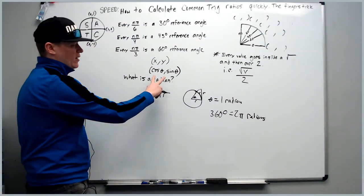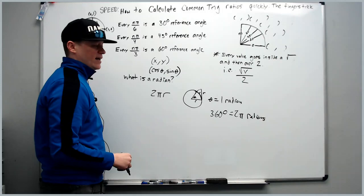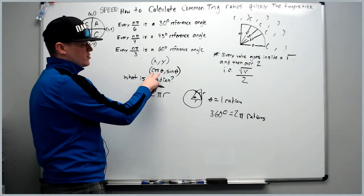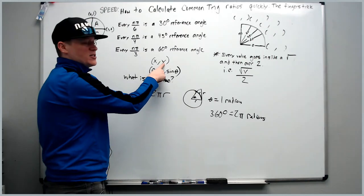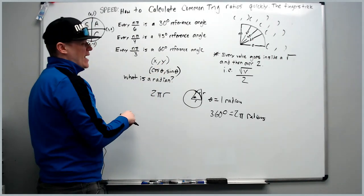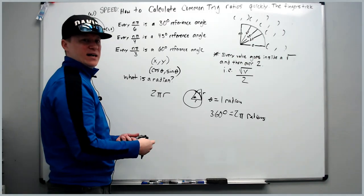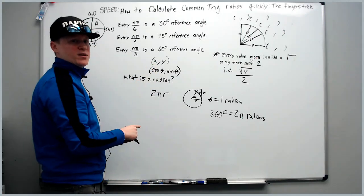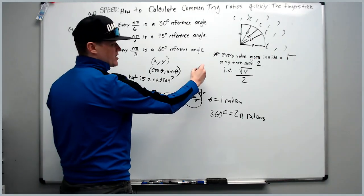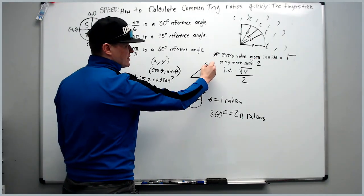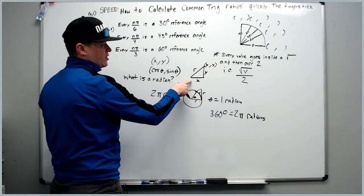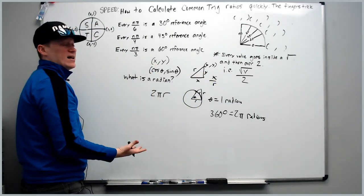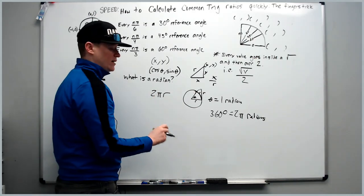Now let's cover cosine of theta and sine of theta in a coordinate plane. On the unit circle, cosine of theta is x and sine of theta is y — they are synonymous. Outside a unit circle with radius other than one, cosine is still associated with x (specifically adjacent over hypotenuse, x over r) and sine with y, even though they're not identical to x and y when the radius isn't one.